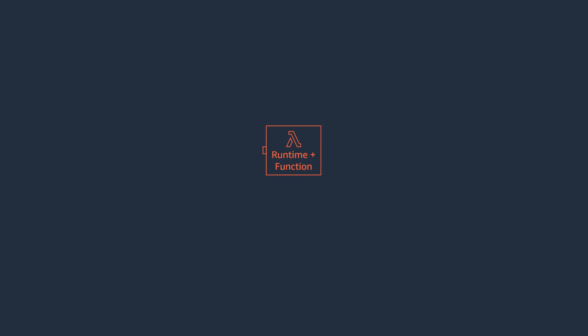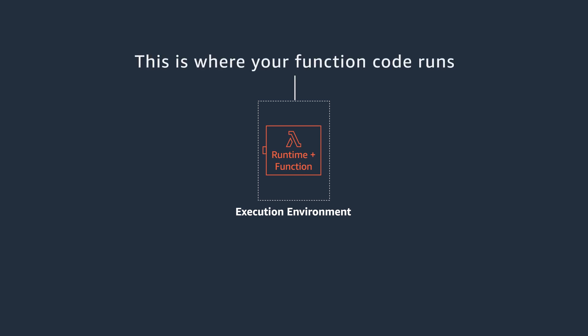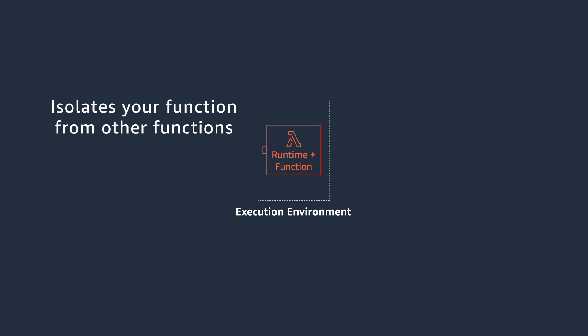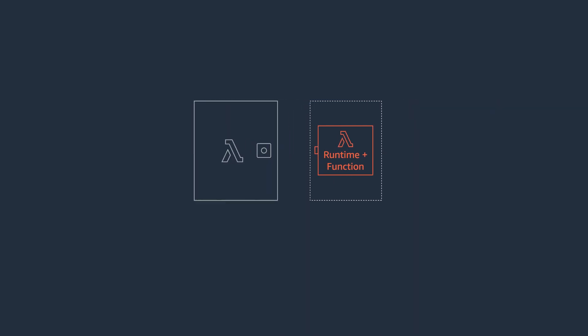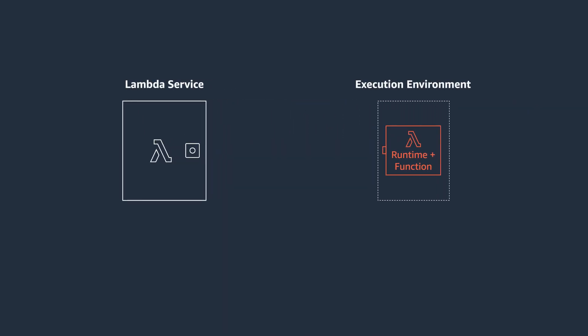Now let's take a look at how Lambda extensions work and talk a little bit about Lambda's environment. Lambda provides a sandboxed environment, and this is where your function code runs. This isolates your function from other functions and provides resources such as memory, which you specify in the function configuration. The Lambda service initializes this environment on demand during the first invocation, or in advance of the first invocation if you use provisioned concurrency, which keeps functions initialized and ready to respond in double-digit milliseconds.